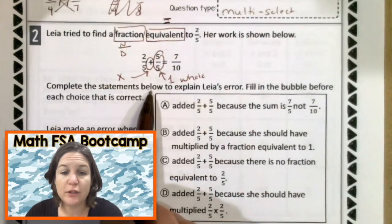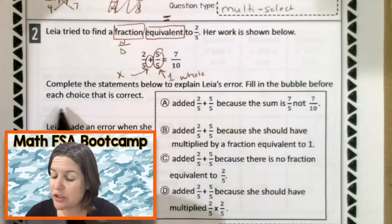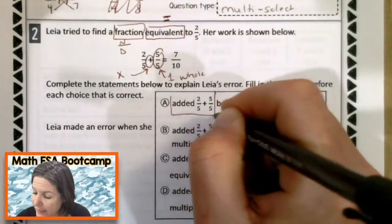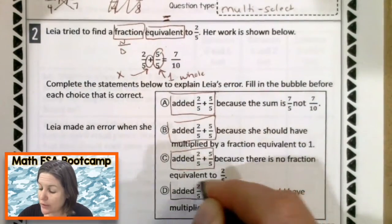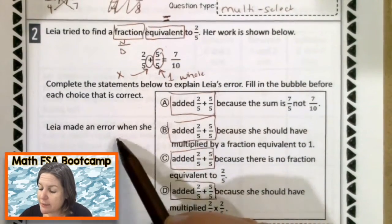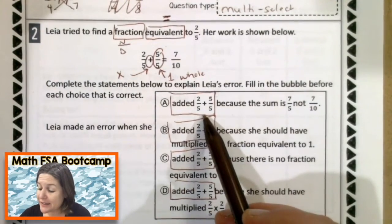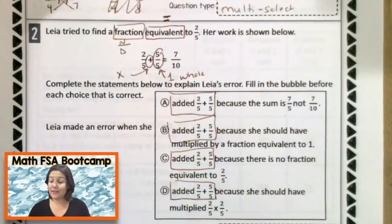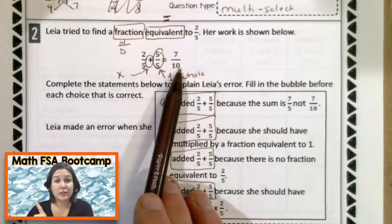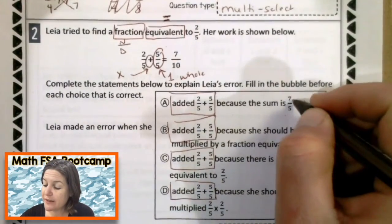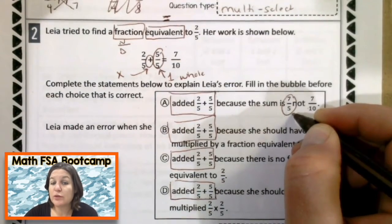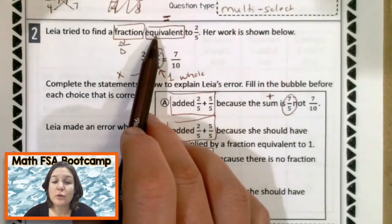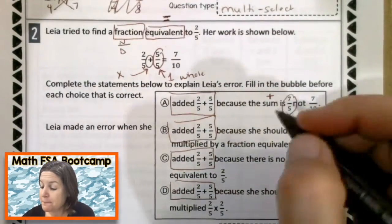So complete the statements below to explain Leah's error. Fill in the bubble before each choice that is correct. So Leah made an error when she, well, they all say added two-fifths plus five-fifths. So we know that that is wrong. We know that she should have multiplied, right? Okay, so did Leah make an error when she added two-fifths and five-fifths because the sum is seven-fifths? Well, this is true because when we're adding fractions, we do use addition in the numerator. Yeah, man. And our denominator slides across. Our denominator is supposed to slide across, not be added together. So if she was trying to find them, it should have been seven-fifths. That is true. If she was trying to find the sum, which means that we're adding them. But that wasn't what she was trying to find. She was trying to find a fraction that's equivalent. So that has nothing to do with adding fractions, okay? So we can eliminate choice A.